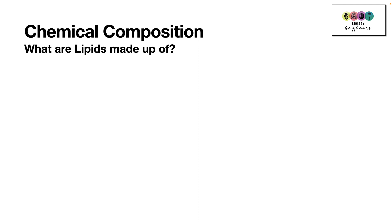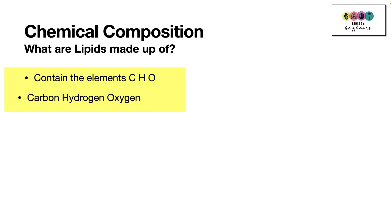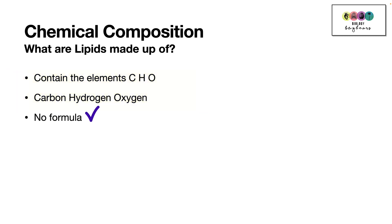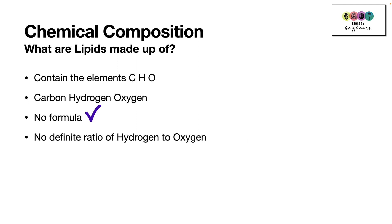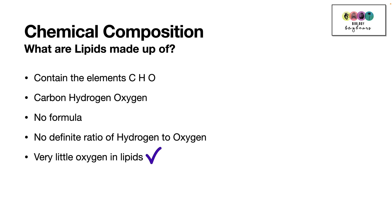Now look at the chemical composition. What are the elements in lipids? Lipids contain the elements carbon, hydrogen, and oxygen — very similar to carbohydrates — but there's no formula with lipids and there's no definite ratio of hydrogen to oxygen. There is very little oxygen in lipids and a lot of hydrogen.